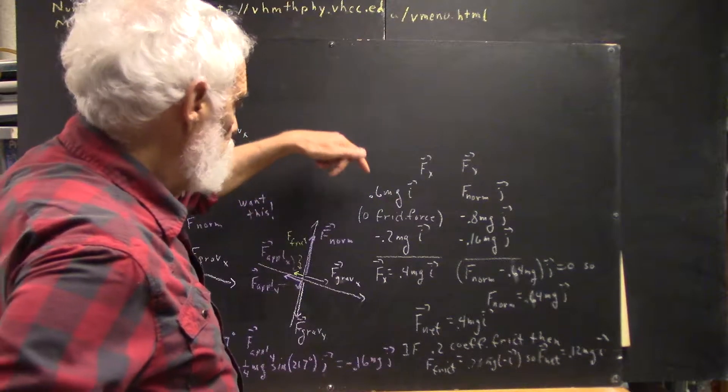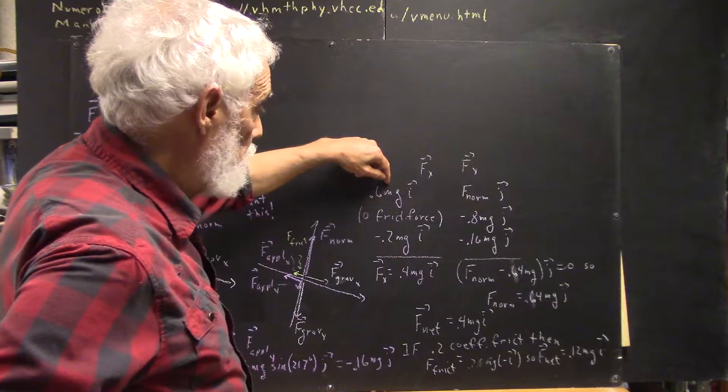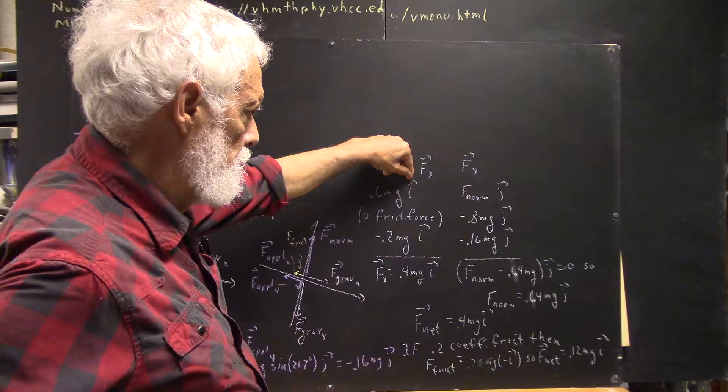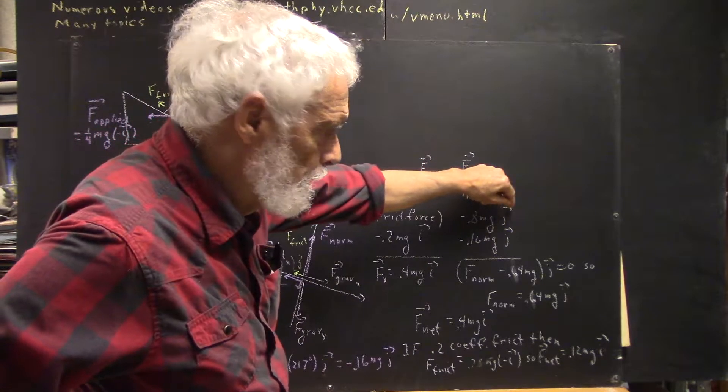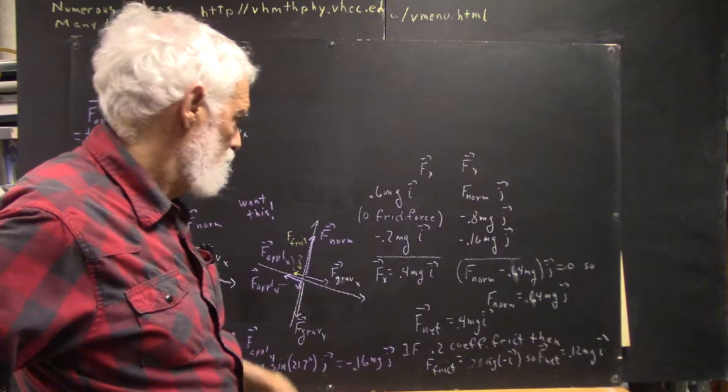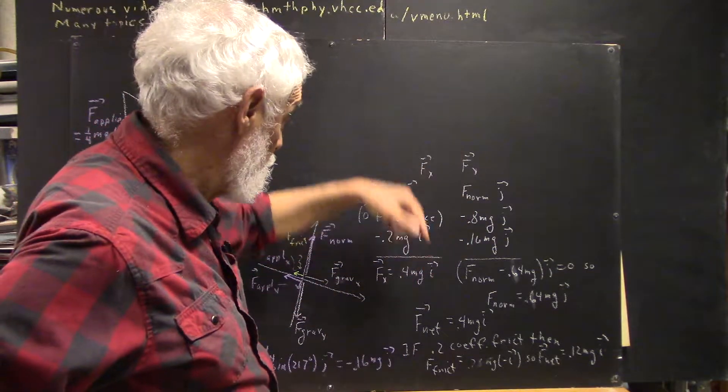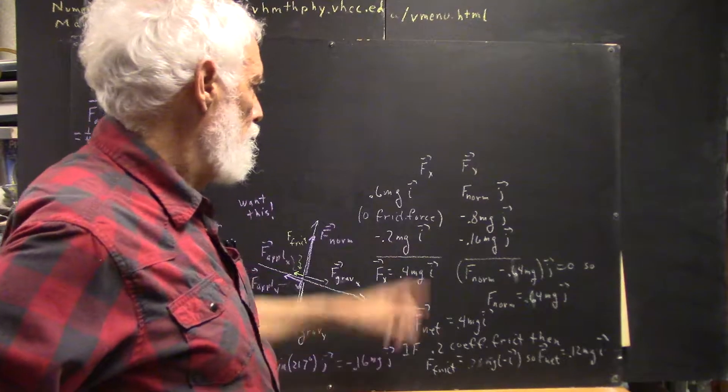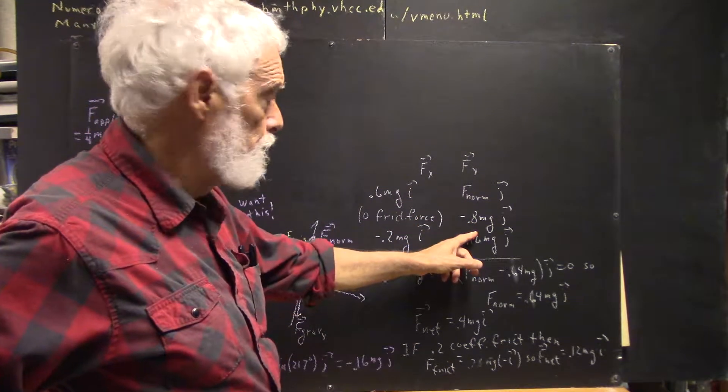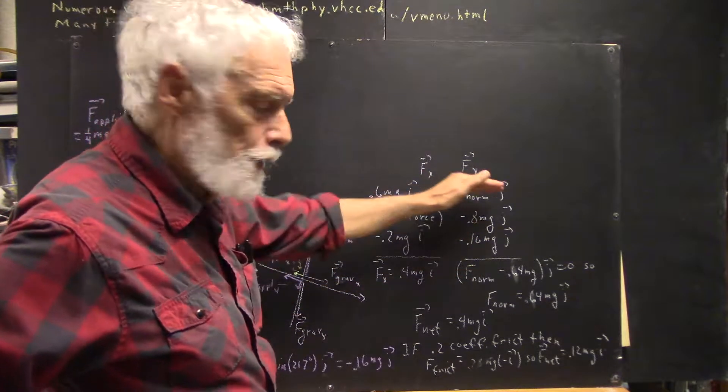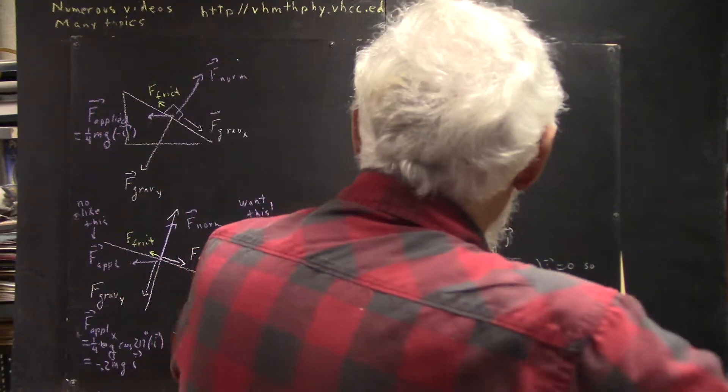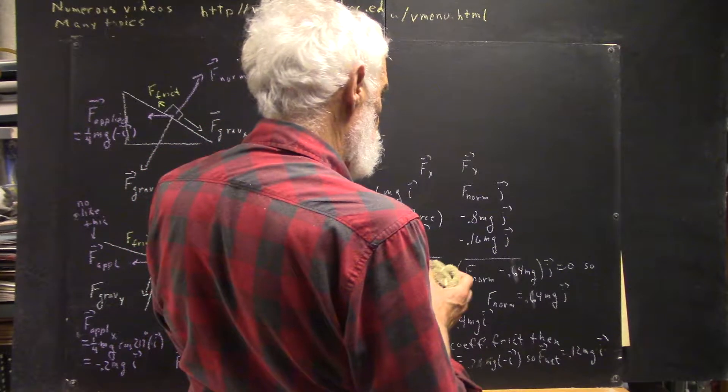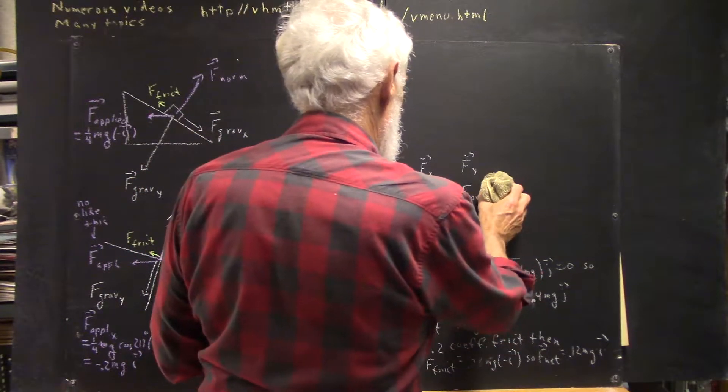So, as before, we have 0.6 mg i and negative 0.8 mg j. I don't know why I had a hard time finding that. Not that much there, just getting late. Negative 0.8 mg times j. These are the components of the gravitational force, and really I should have listed those right across from one another, because we want to keep track of what we have. So I'm going to kind of do that.